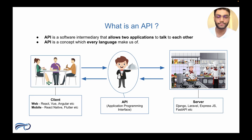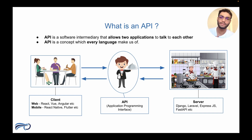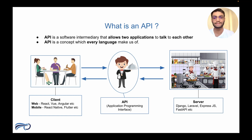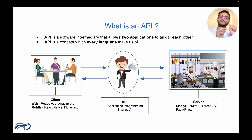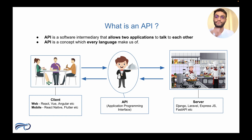Let's take a real world example. Everyone uses Instagram. Whenever you are scrolling through Instagram and you like a reel or a photo, you hit the like button. Whenever you hit the like button or double tap on your screen, a request is made which the API takes and brings to the server. The server does some processing and storage in the database, brings the response back to the API, and the API shows that it has been liked with the red heart in Instagram.